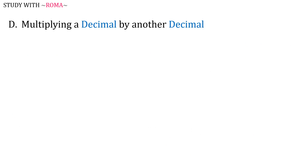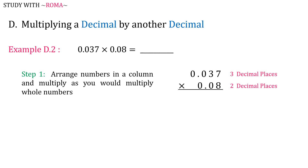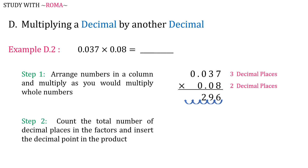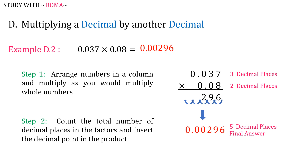And the last one. Example number 2: 0.037 times 0.08. Step 1: Arrange numbers in a column and multiply as you would multiply whole numbers. Step 2: Count the total number of decimal places in the factors and insert the decimal point in the product. A total of five decimal places, so move the decimal point five places to the left. Our final answer is 0.00296.